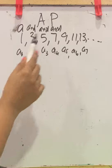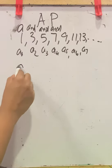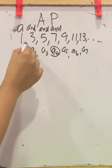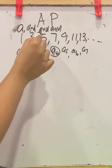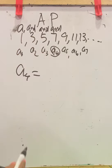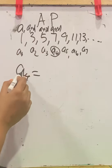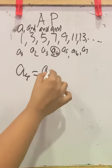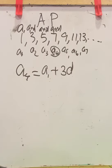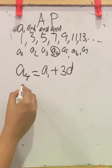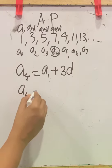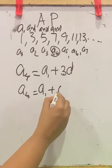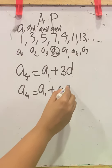So to get the 4th term A4, starting from A1: A1, A1 plus D, A1 plus 2D, A1 plus 3D. To get A4, you need A1 plus 3D. From this, an equation forms: A4 equals A1 plus 3D, and we can write that as A1 plus (4 minus 1) times D.